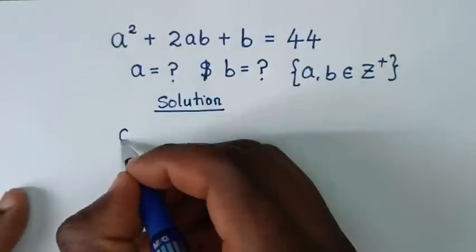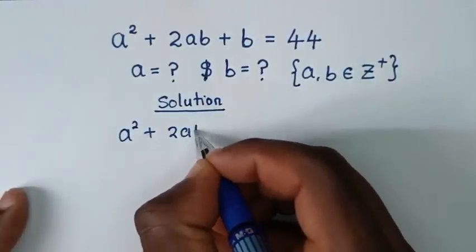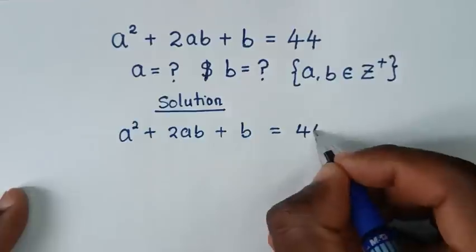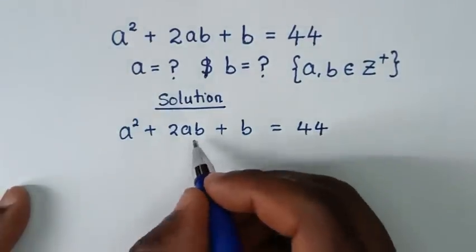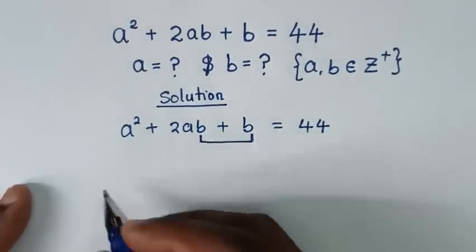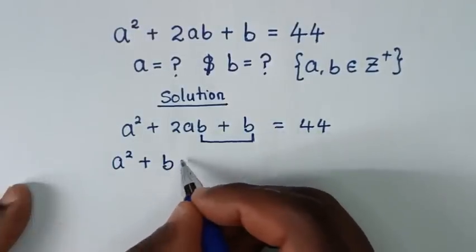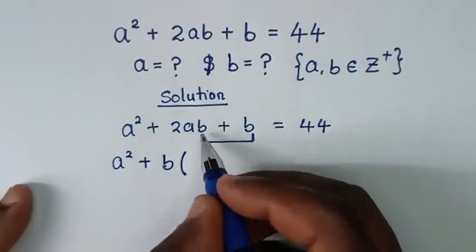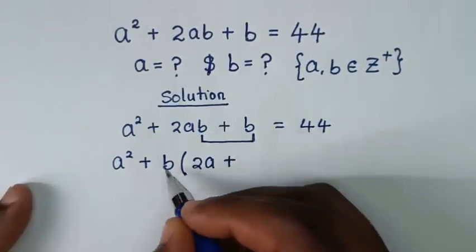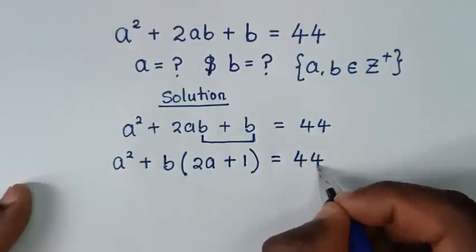From our problem, a squared plus 2ab plus b equals 44. Here, b is common so we will factorize b. It will be a squared plus b times bracket 2a plus 1 bracket, equal to 44.